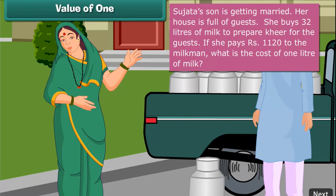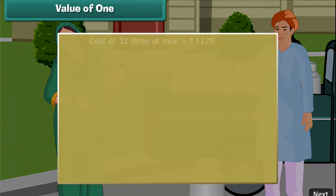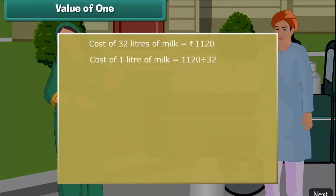If she pays 1,120 rupees to the milkman, what is the cost of 1 liter of milk? Cost of 32 liters of milk is 1,120 rupees. Cost of 1 liter of milk is 1,120 divided by 32. Let us learn to divide 1,120 by 32. Write the two numbers as shown. Consider the digits of 1,120. The first digit, 1, is too small to hold 32.